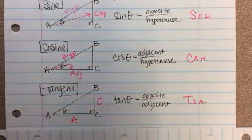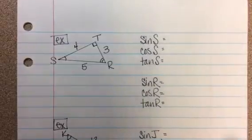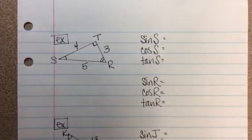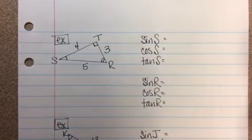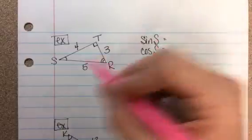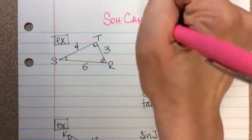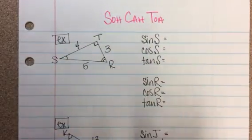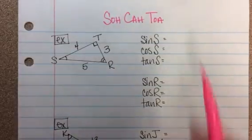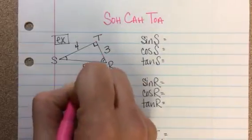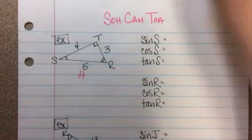Let's do some examples. I've got one set up here. If they're asking for sines or cosines of angles, the first thing I do is label the triangle. I write SOH-CAH-TOA at the top of the page so I can always reference it. The hypotenuse is always our longest side, opposite the right angle — I'll label that with an H.